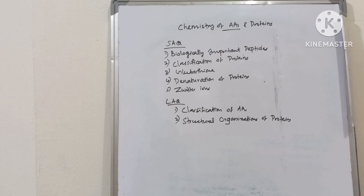Chemistry of amino acids and proteins, short answer questions: biologically important peptides, classification of proteins, glutathione, denaturation of proteins and zwitterions.